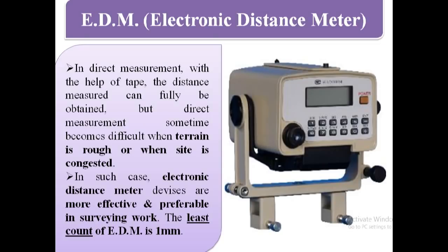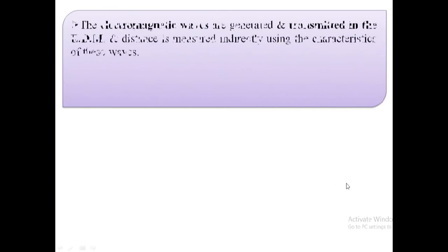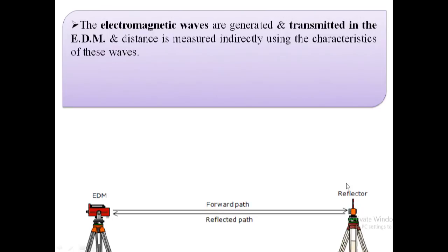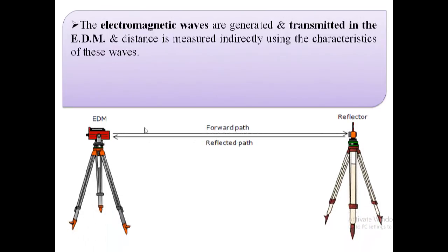The least count of EDM is 1 mm. The electromagnetic waves are generated and transmitted in the EDM, and distance is measured indirectly using the characteristics of these waves.